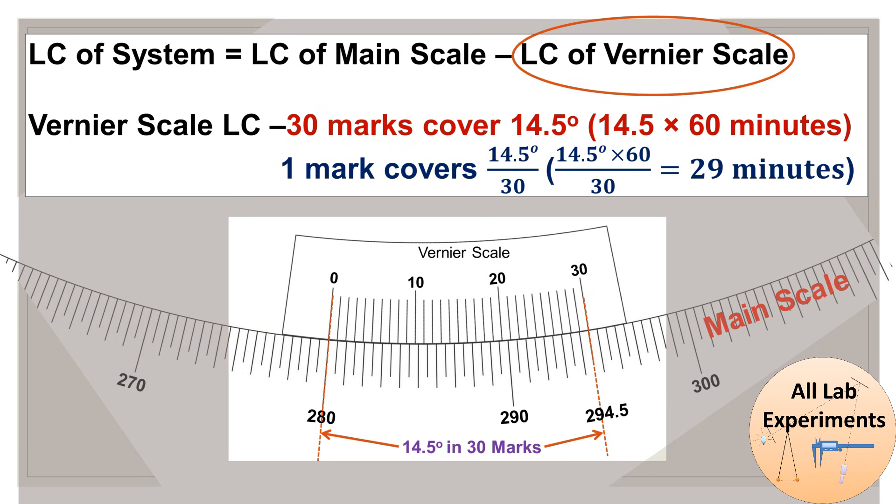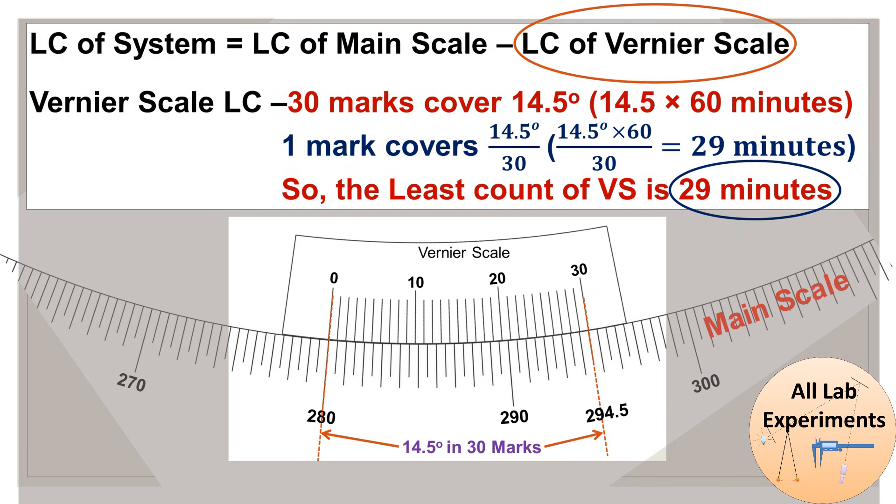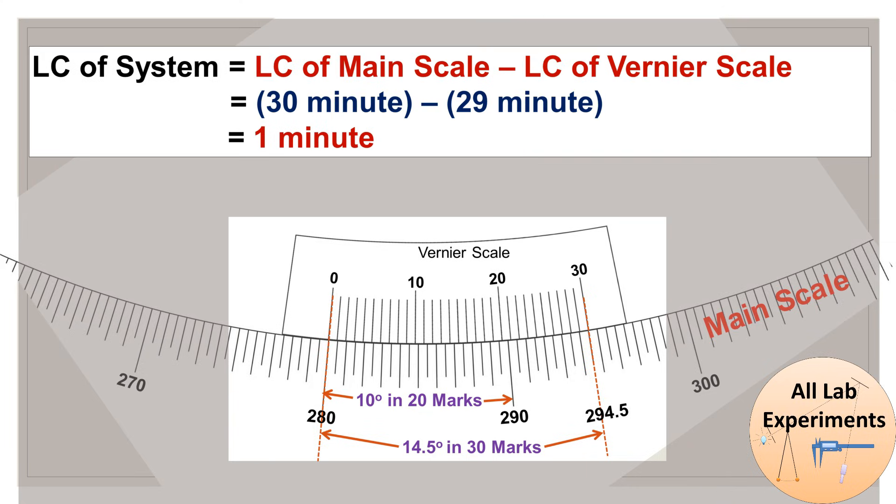So now we have calculated the least count of vernier scale which is 29 minutes. The least count of the system is the least count of main scale minus least count of vernier scale, which is 30 minutes minus 29 minutes equals 1 minute. You can also solve this expression in degrees, but there is some problem of irrational numbers, so we are handling this in terms of minutes.